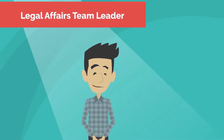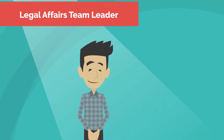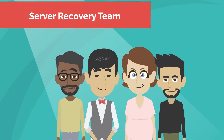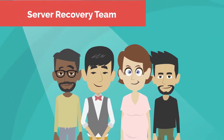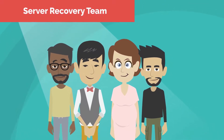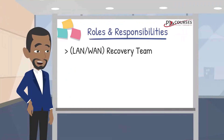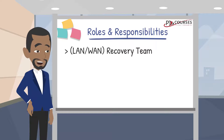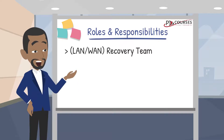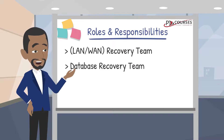Then you have the legal team leader, who provides the organization with legal counsel. There's also the server recovery team, which manages organization servers and is able to bring them back to health if needed. You also have the LAN WAN recovery team, who are in charge of the local access network and wireless access network, ensuring that all office computers are functional and network adapters can access the internet. Then there's the database recovery team, who manage the network database backups and restoration systems.